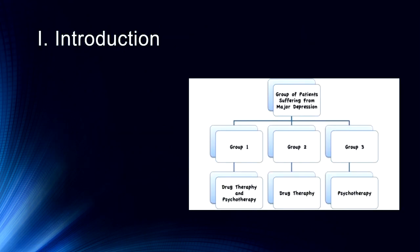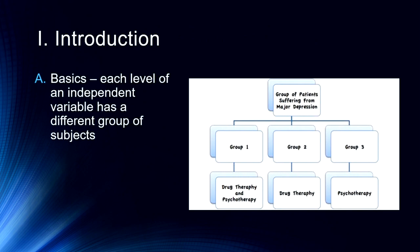Let's kick it off with a quick introduction. So when we're talking about between subjects or between groups design, each level of an independent variable has a different group of subjects. In this example we see here this might be a study on major depression and different treatments for major depression. In one case we might have drug therapy, another case we might have psychotherapy, and then we might put the two together in a third group and call that drug therapy and psychotherapy.